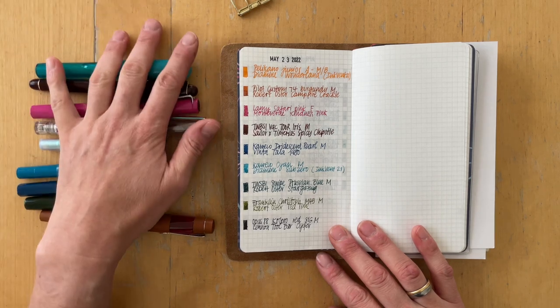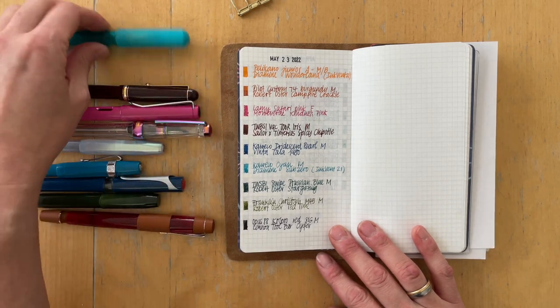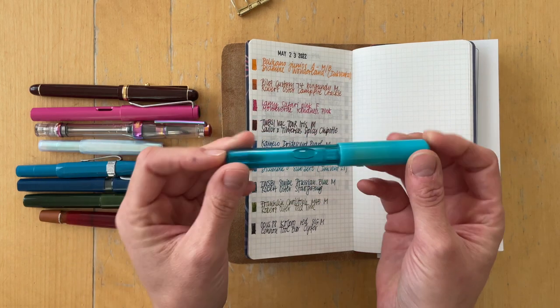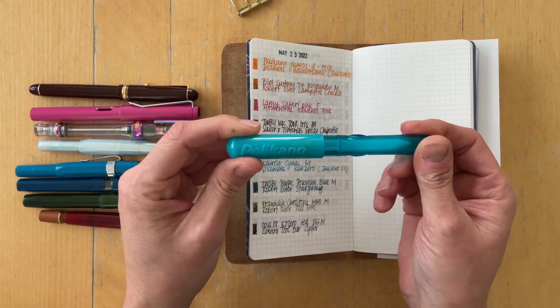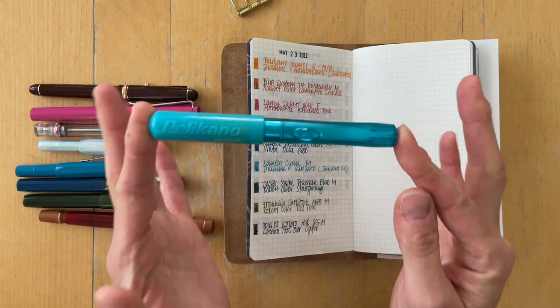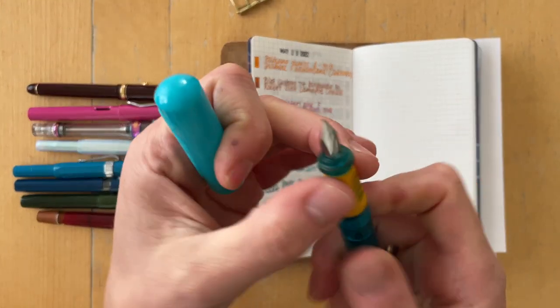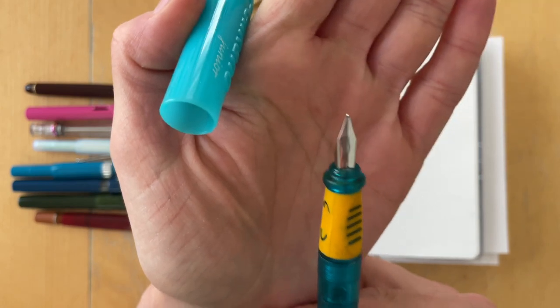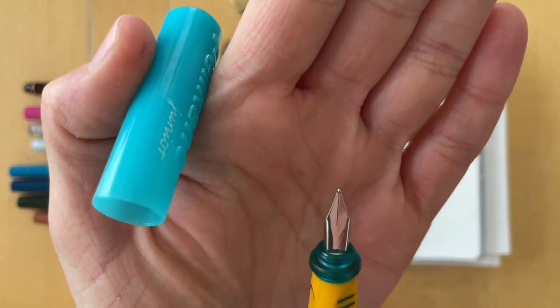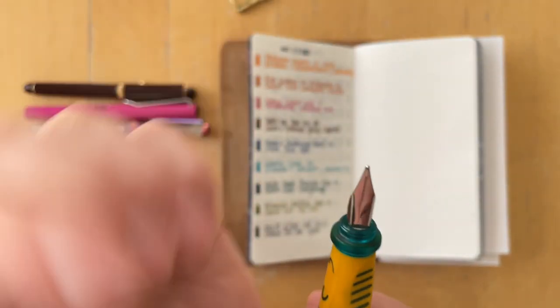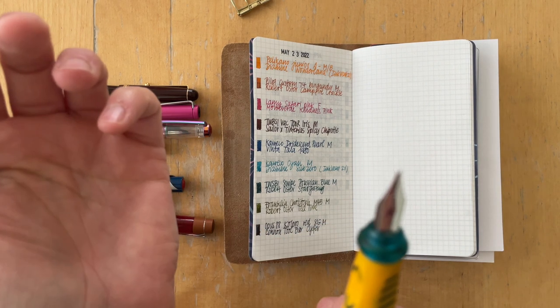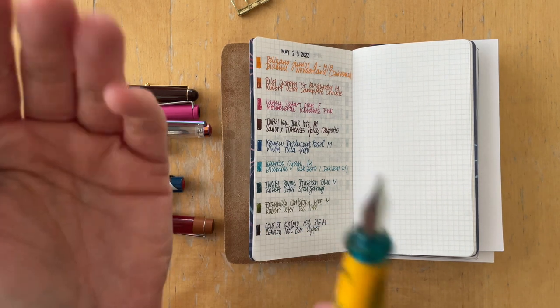These are the ones that were inked. I had the Pelikan Junior, that is one that my middle son learned to write with when he learned how to write with a fountain pen. The nib says A, it's probably for Anfänger, which means beginner.